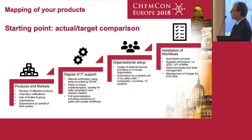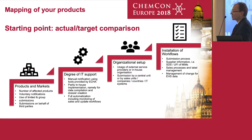If they go for voluntary notifications and submissions on behalf of third parties, this might raise up the number of your notifications. And if they use the possibilities of limited and group submissions, this will of course lower the number of notifications. Your sales processes need to be linked to the label management.